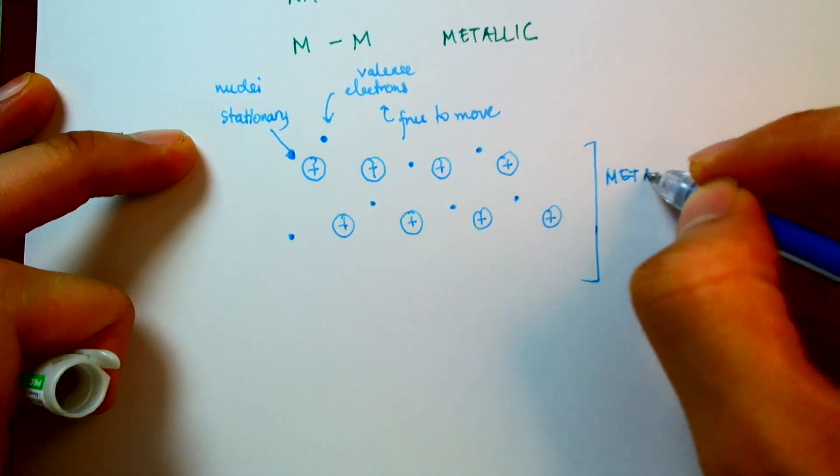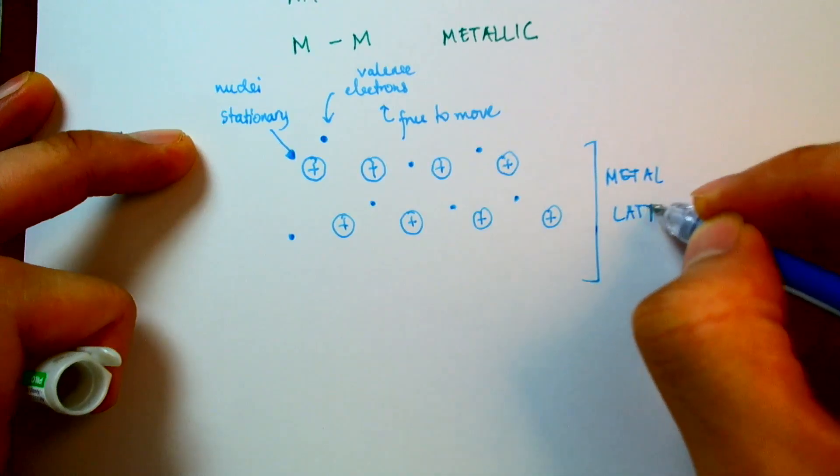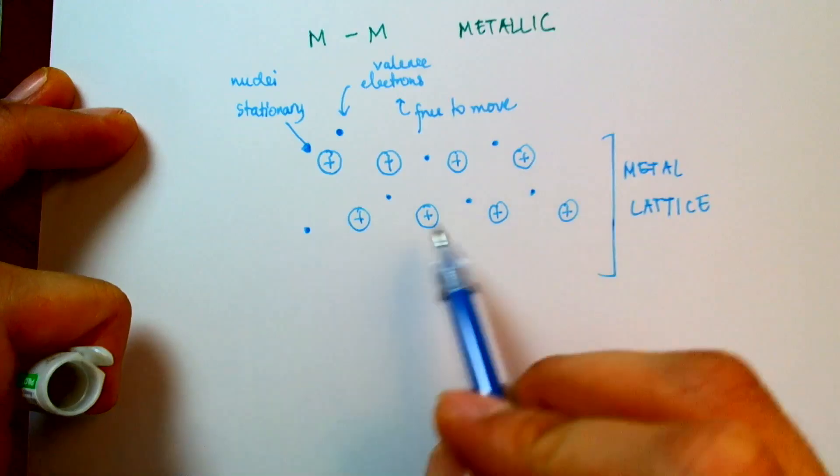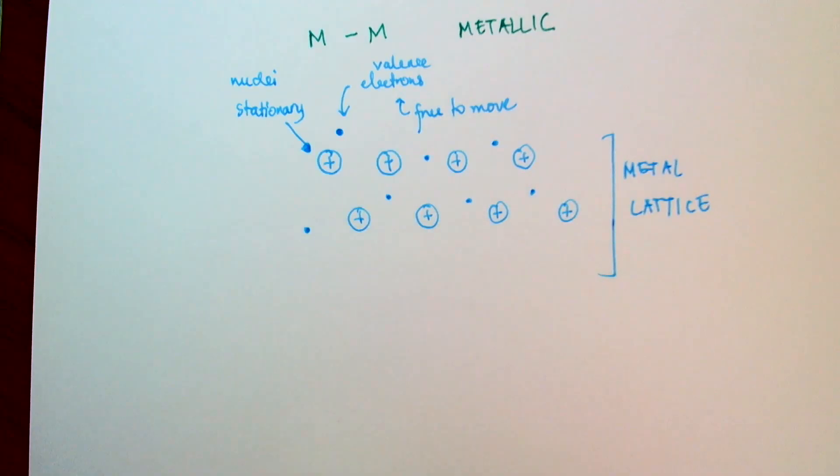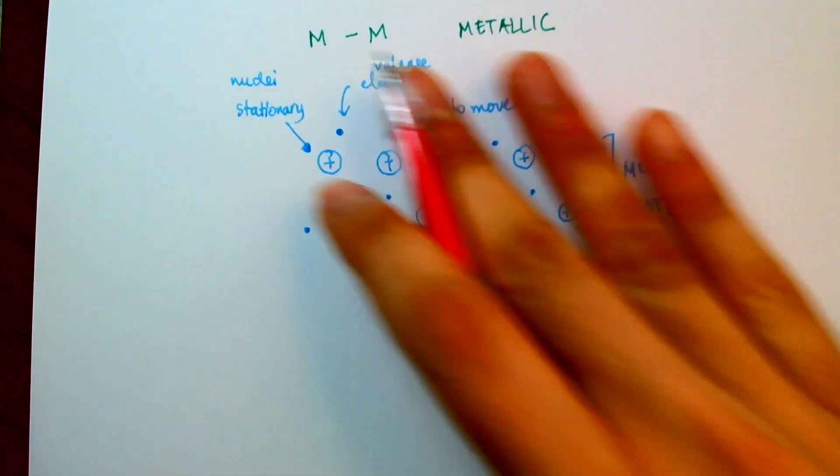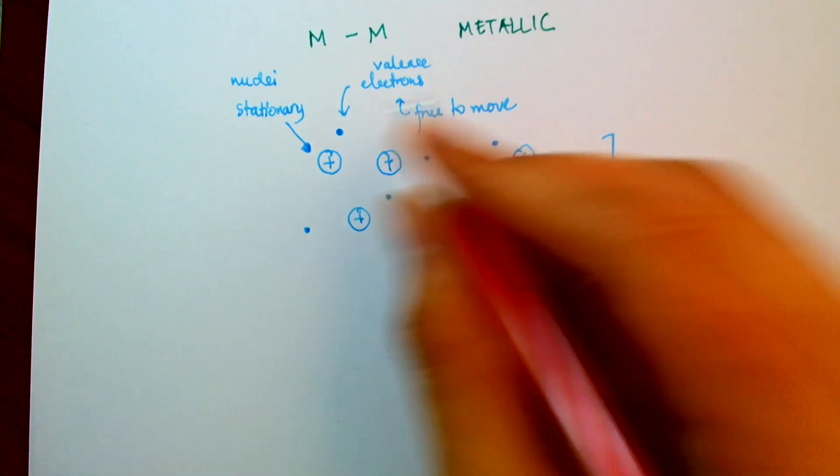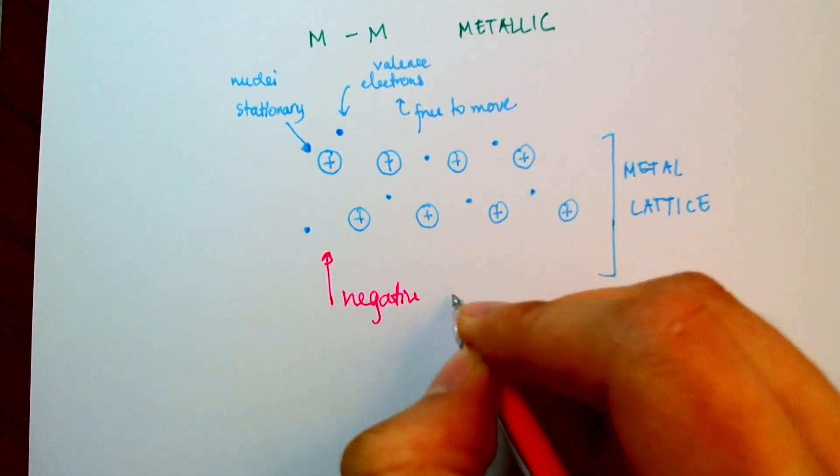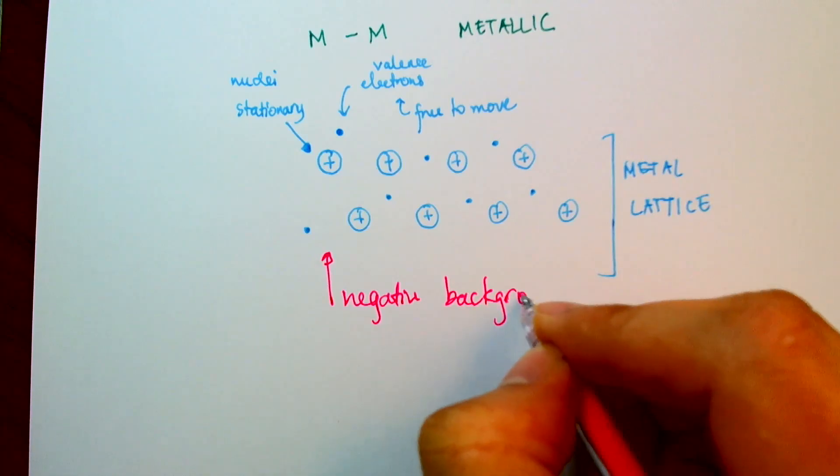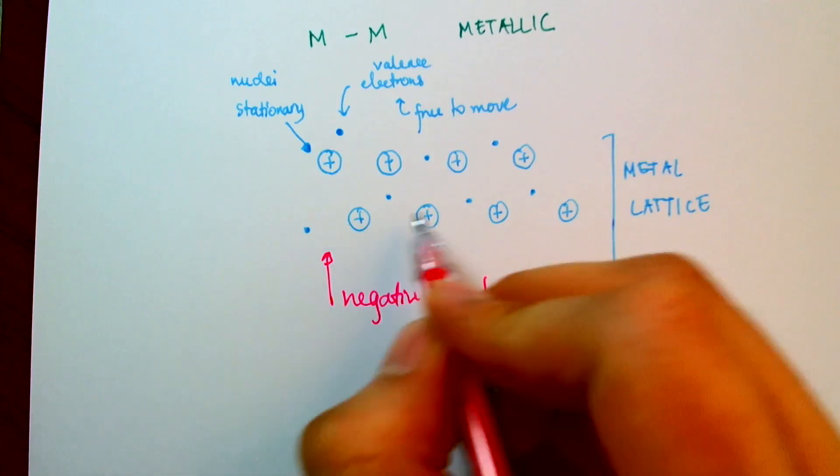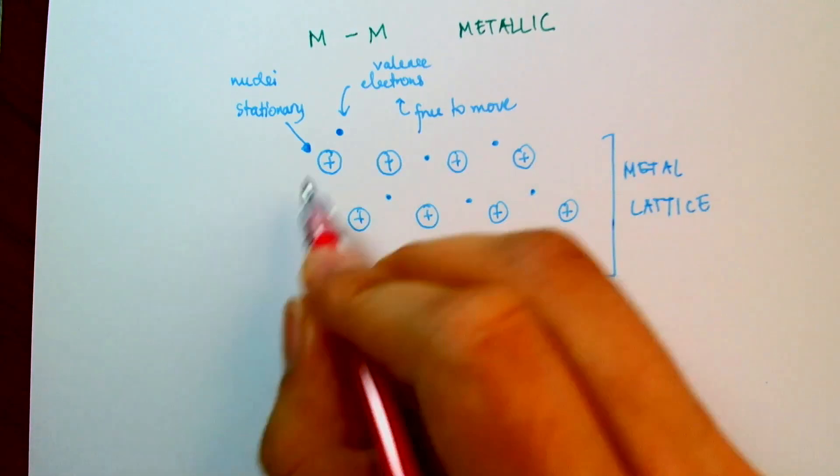So we have a metal lattice, and lattice is just a big word to mean a regular arrangement of atoms. In this case, the nuclei are all regularly arranged. And this sea of electrons produces a smear of negative charges. So you have a smear of negative background, while embedded in it are these positive ions, positive nuclei.